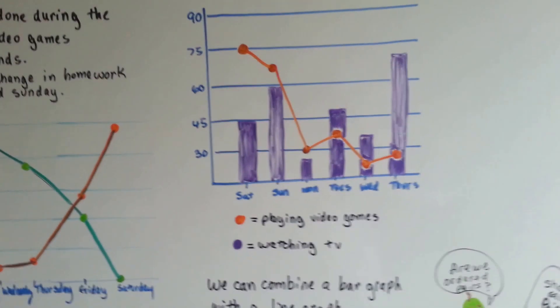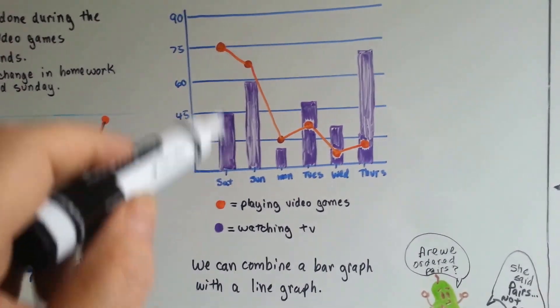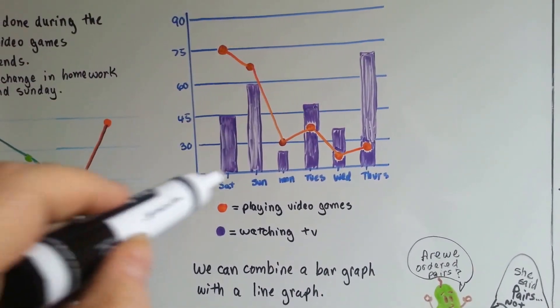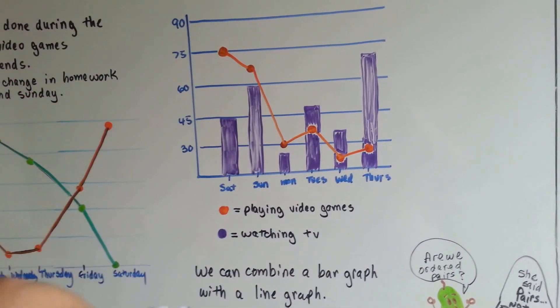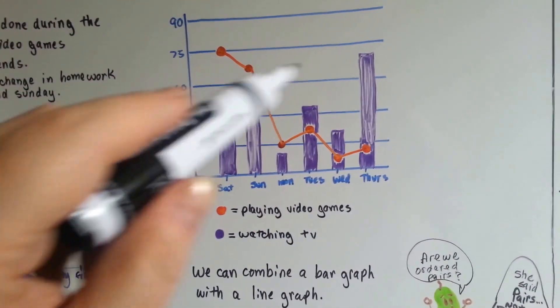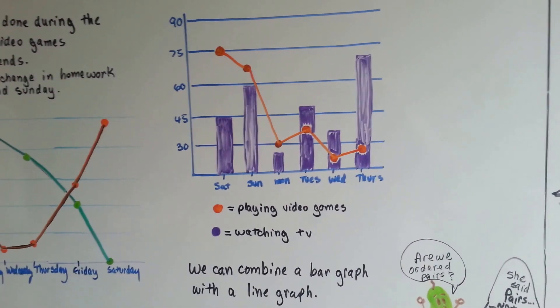We can also combine a bar graph with a line graph. This is playing video games compared to watching TV. And then we can see the difference in the information, can't we?